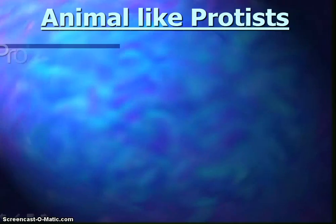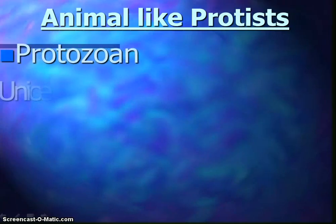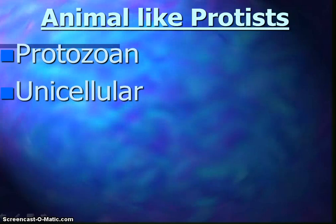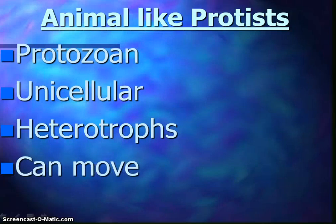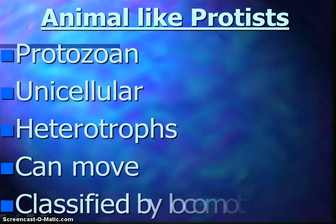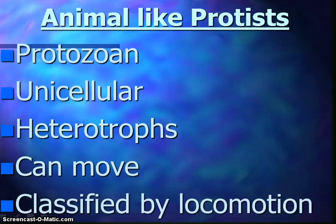Now we're going to talk about the animal-like protists, or the protozoans. They are called protozoans because it means 'first animals.' There are about 40,000 different species. They're unicellular, they can move, they don't have cell walls, and they are heterotrophs — they consume bacteria and detritus and trap food. They are classified by how they move, and most live in water, moist soil, or inside other organisms.